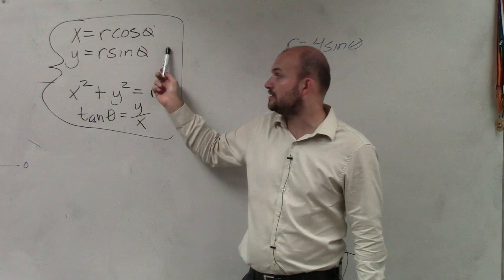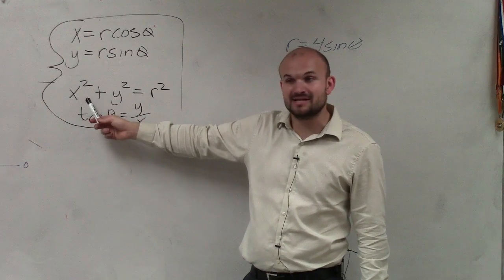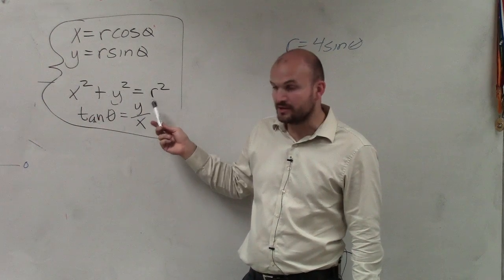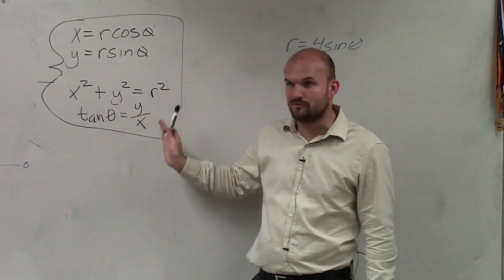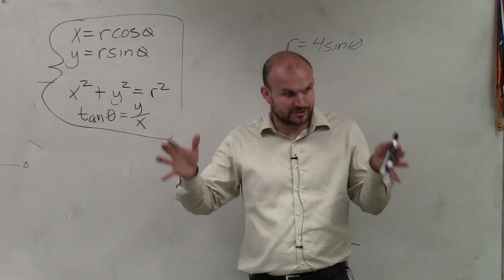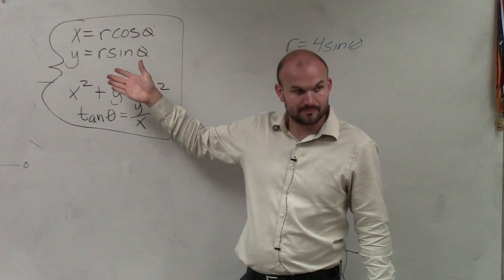y equals r sine theta. The Pythagorean theorem applies here: x squared plus y squared equals the radius squared. And also that tangent of theta is y over x. Do you remember me creating the triangle on the polar graph? That's where we get all these.